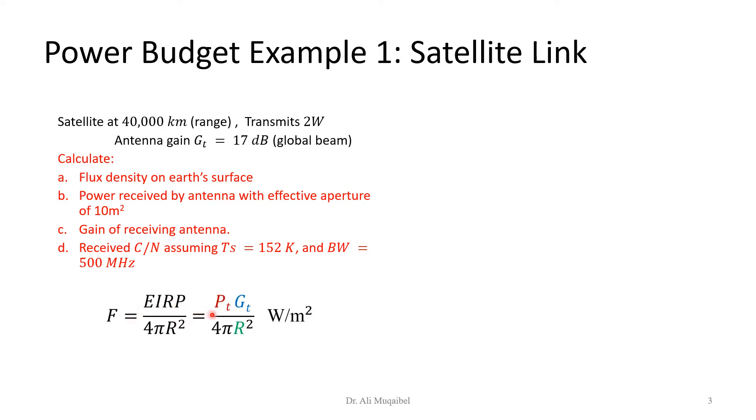Let's take it one at a time. For the flux density, you need to know that you have to divide the EIRP or P_t times G_t divided by 4πR². R is the distance here which is 40,000 kilometers. We know P_t and we know G_t, so we just go ahead and substitute in the numbers.